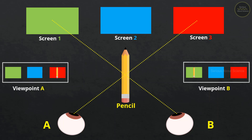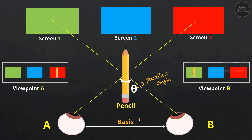Summarizing the diagram: the angle formed between the two points of observation is the parallax angle theta. The distance between the two points of observation is called the basis, denoted by small letter b.